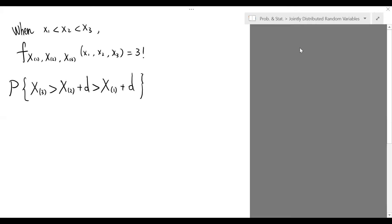To finish this problem, we just need to compute the probability of this event, which is just the integral of the joint density function over the given region. We would like to set up the iterated integral in the x sub 3, x sub 2, then x sub 1 order. Recall that the joint density function is simply 3 factorial.